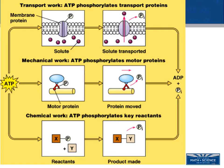All of these reactions together constitute our metabolism. For instance, when I phosphorylate a membrane protein in a cell, that energy can be used to transport solute across the membrane. It can also power motor proteins that move things along the cytoskeleton, and when certain molecules are phosphorylated, it may allow for chemical reactions and chemical work to occur.